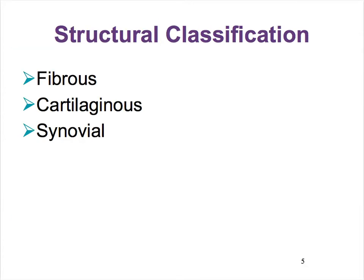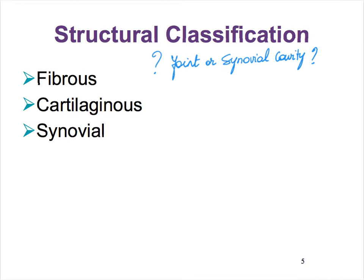That brings us to the structural classification of joints. Again we have three subclasses: fibrous structural joints, cartilaginous structural joints, and synovial structural joints. The questions we ask this time are: is a joint cavity — sometimes called a synovial cavity — present or not? The only one that has a synovial cavity out of these three subclasses is the synovial joints. So synovial joints are the only ones that have a synovial cavity or a joint cavity.